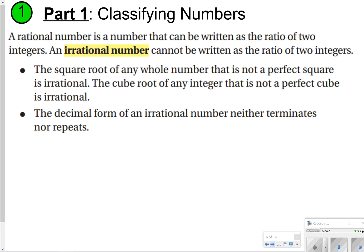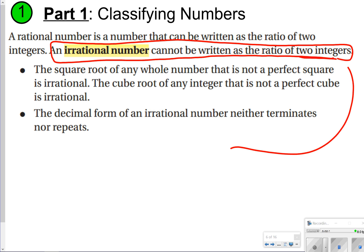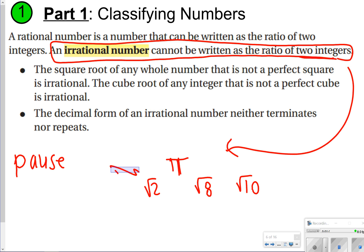The first thing we want to make sure is we know what an irrational number is — it cannot be written as a ratio of two integers. This definition is the best thing to write down. That's going to include things like pi, the square root of 2, and non-perfect squares like the square root of 8 or the square root of 10. Any number that does not repeat or terminate is considered an irrational number because we cannot write it as a fraction. Pause the video here, write down some examples, and click play when you're done.